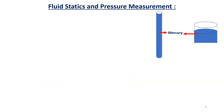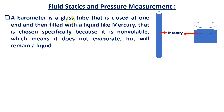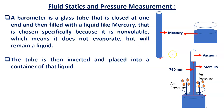One method of measuring atmospheric pressure is by using a barometer. A barometer is a glass tube that is closed at one end, then filled with a liquid such as mercury. The liquid must be non-volatile so that it does not evaporate and remains in liquid form.